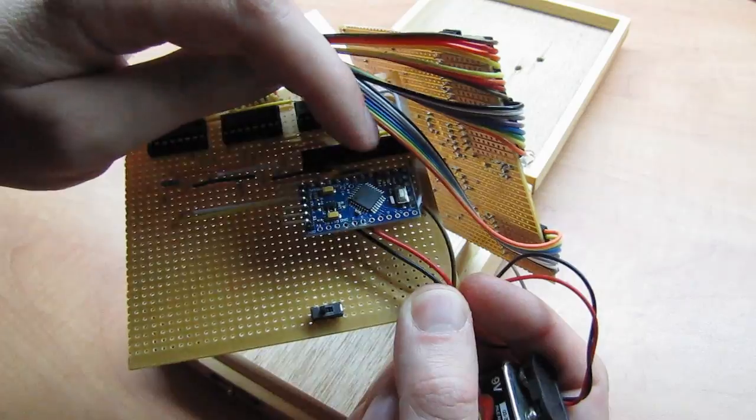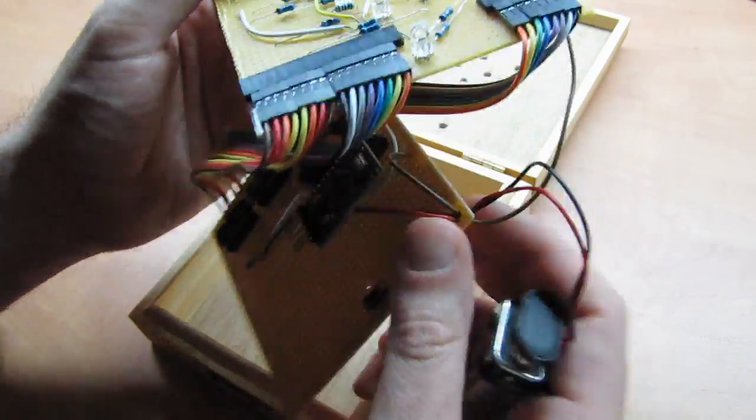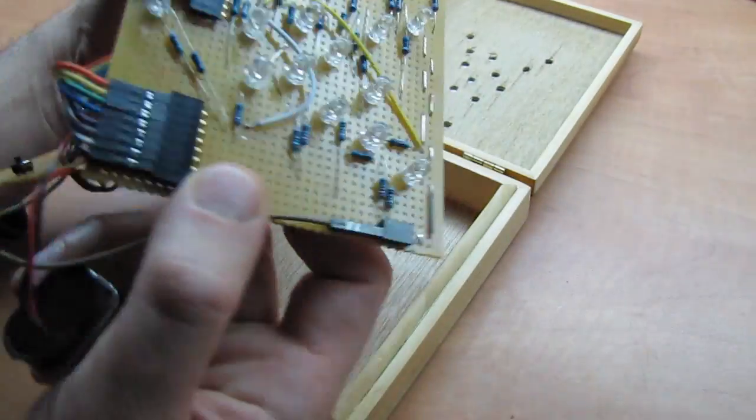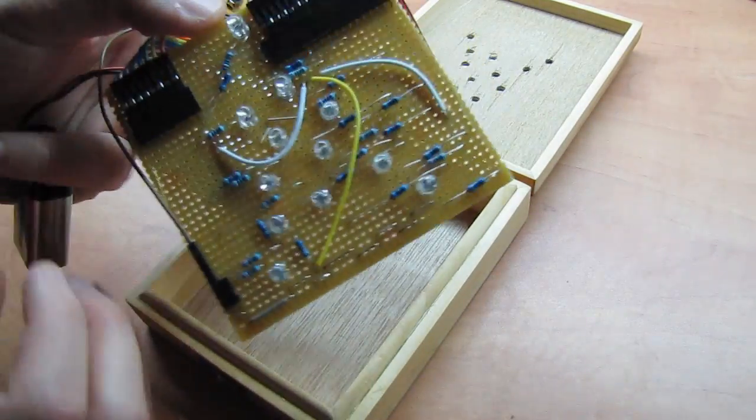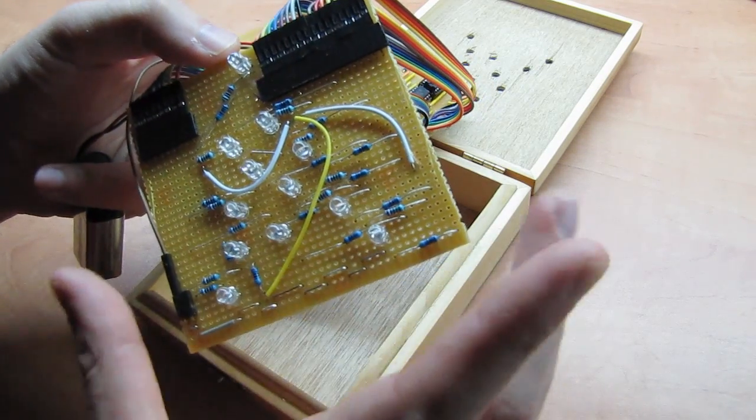And this gives the 5V to both the shift registers and the LEDs. Now because 12 LEDs would consume a considerable amount of current if they all light up together,